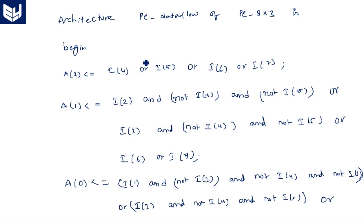If you want to write a behavioral model or structural model, the entity part is common, but the architecture is different. As this is a data flow model, we have written directly using boolean expressions. In the next video, we will see how to write a behavioral model for this priority encoder. Thank you.